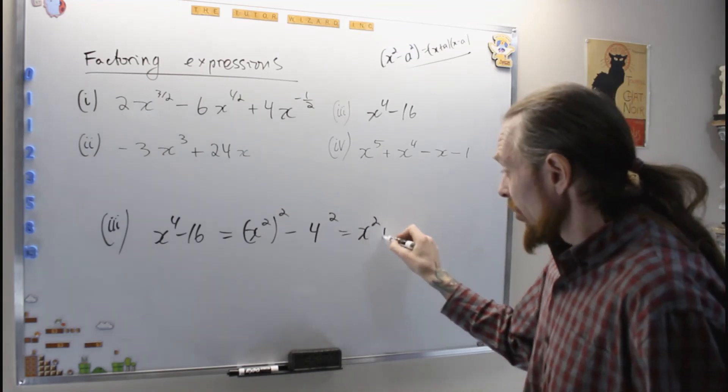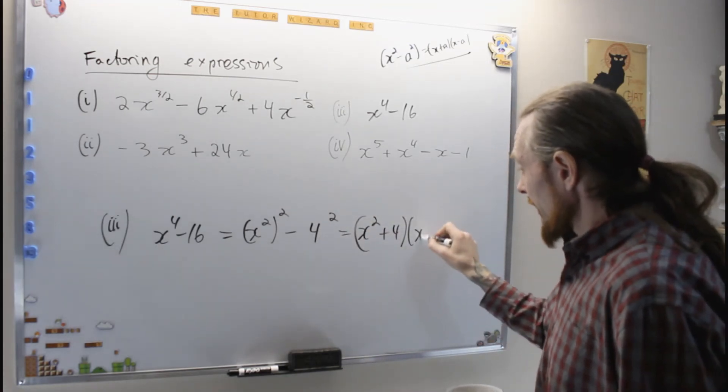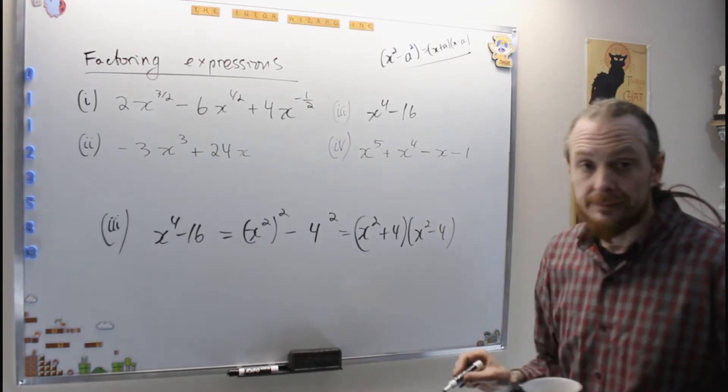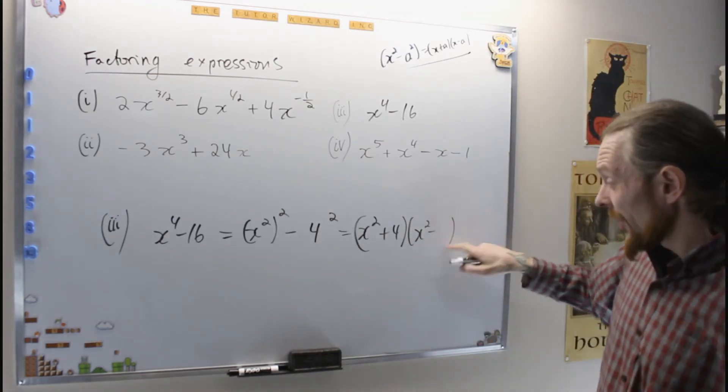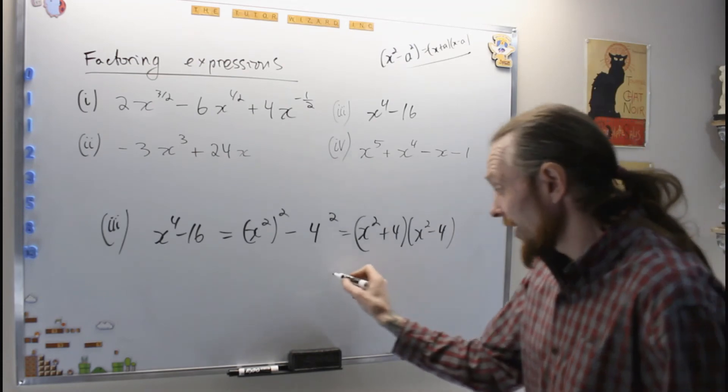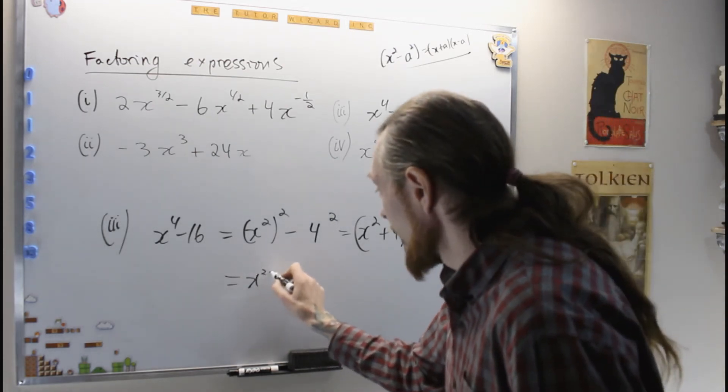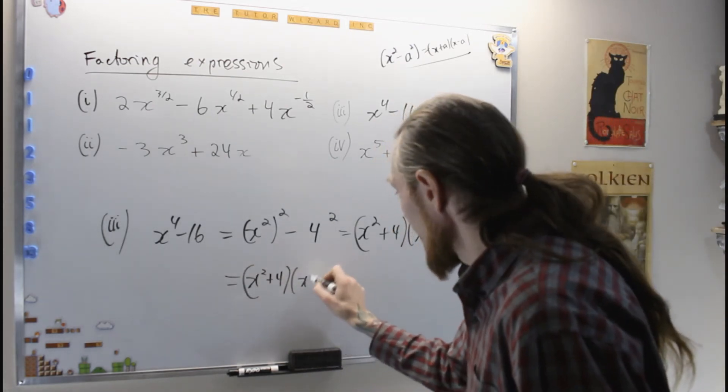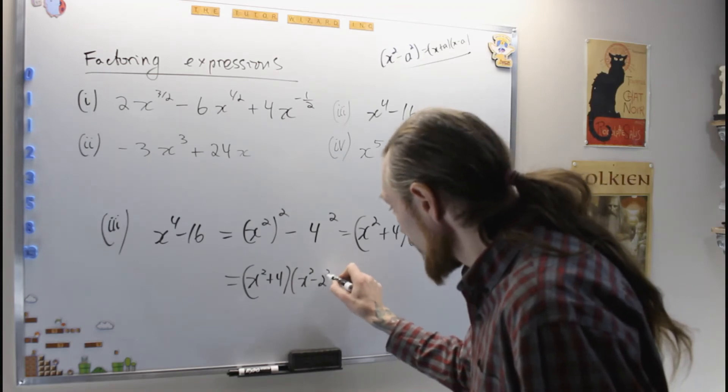So first I run this once on x squared and 4. This is x squared plus 4, x squared minus 4. But now I notice I have it again. 4 is actually 2 squared, x squared plus 4. But this is x squared minus 2 squared, is what I see.